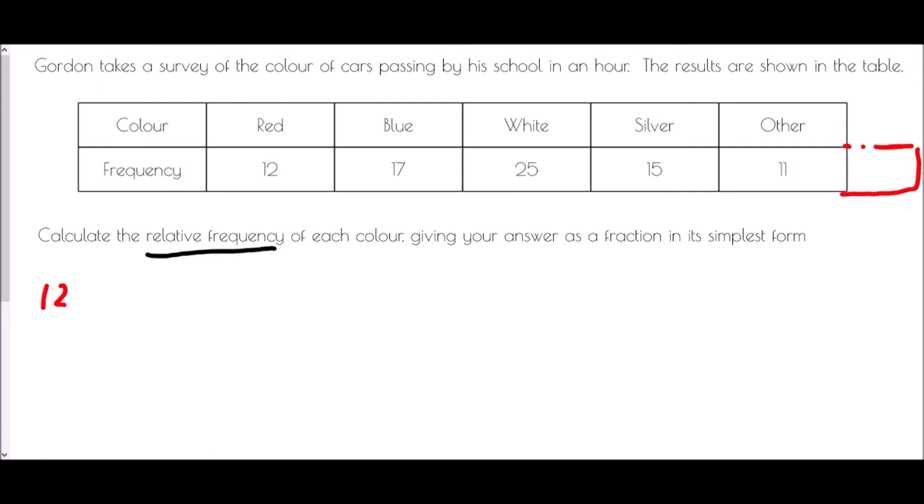The very first thing that we need to know is how many cars did he spot in total. And so we need to add all of those together. So 12 plus 17 plus 25 plus 15 plus 11. So he found 80 cars going past his school.